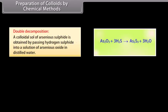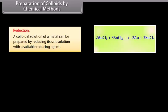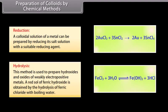Colloidal solutions can be prepared by chemical reactions involving double decomposition, oxidation, reduction, and hydrolysis. Double decomposition: a colloidal sol of arsenious sulfide is obtained by passing H₂S into a solution of arsenious oxide in distilled water. Oxidation: a colloidal solution of sulfur can be obtained by passing H₂S into a solution of sulfur dioxide in water or through an oxidizing agent solution. Reduction: a colloidal solution of a metal can be prepared by reducing its salt solution with a suitable reducing agent. Hydrolysis: a red sol of ferric hydroxide is obtained by hydrolysis of ferric chloride with boiling water.